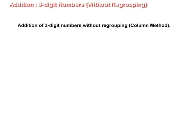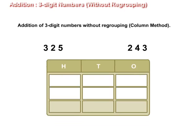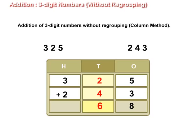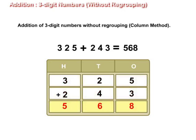Let us understand addition of three-digit numbers without regrouping by column method. We have two numbers: 325 and 243. First, we will arrange the numbers vertically in columns. Write three in the hundreds place, two in the tens place, and five in the one's place. Then place two below three in the hundreds place, four below two in the tens place, and three below five in the ones place. We shall start adding the digits from the one's column. Five plus three is equal to eight. Next, add the tens place: two plus four is equal to six. Then add the hundreds place: three plus two is equal to five. Thus, 325 plus 243 is equal to 568.